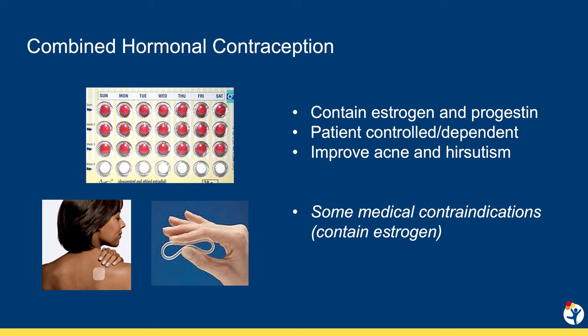They can also take active tabs continuously without any planned breaks. This type of dosing is also safe to do with the patch or the ring. Combined methods also improve acne and hirsutism, which may be an important benefit for some patients. The pill, patch, and ring are safe for most teens, but there are some medical contraindications, such as those patients who have an existing thrombophilia.